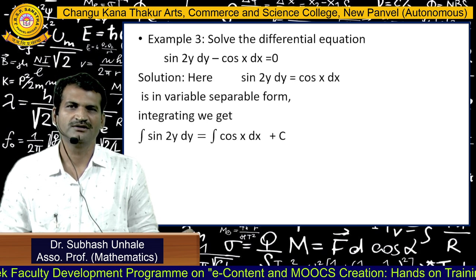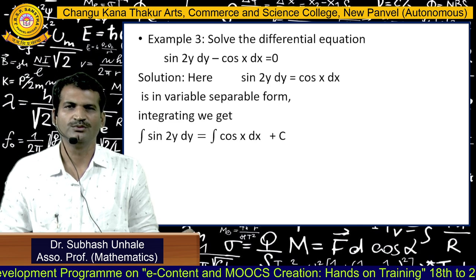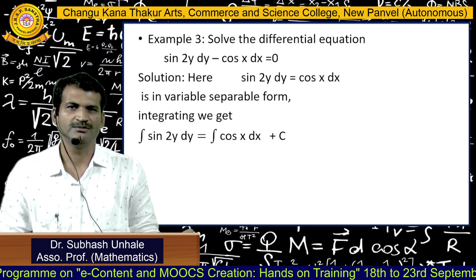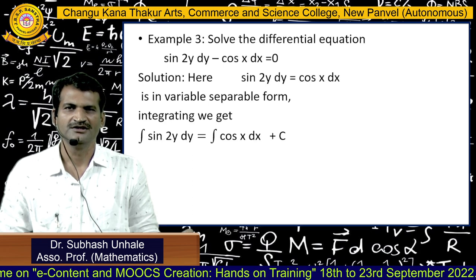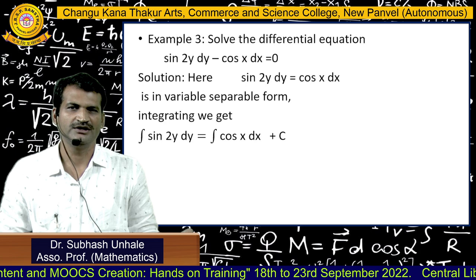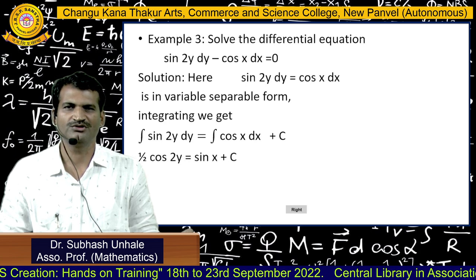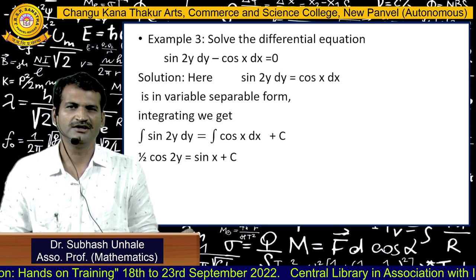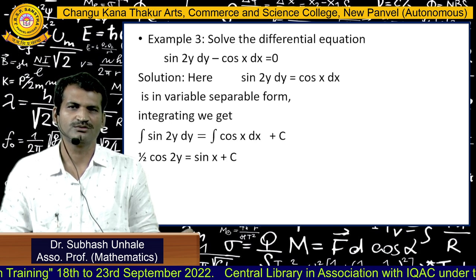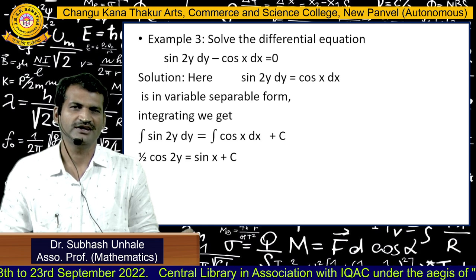Integrating sin2y·dy = cosx·dx gives the general solution: −(1/2)·cos(2y) = sin x + c, where c is the constant of integration.